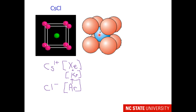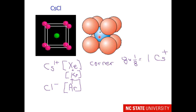We'll pick one color for cesium and one for chloride. Cesium will use the red sphere — that is a corner site, with 8 corners times one-eighth, giving us one cesium cation. The blue sphere occupies the center site, wholly owned by the unit cell, giving us one chloride ion. So the ratio is one cesium to one chloride, which is what Mother Nature intended.